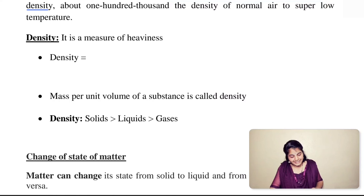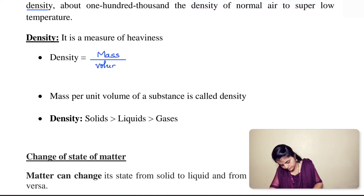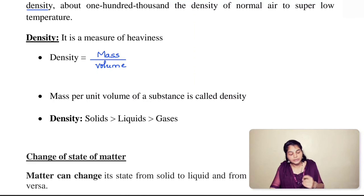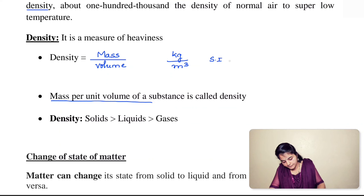Density measures the heaviness of matter. Density is given by the formula: mass divided by volume. So mass per unit volume of the substance is called density. The SI unit of mass is kg and that of volume is m³, therefore the SI unit of density is kg/m³.